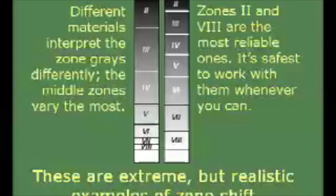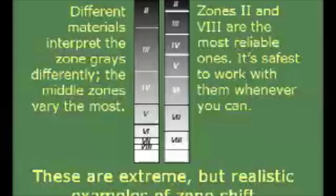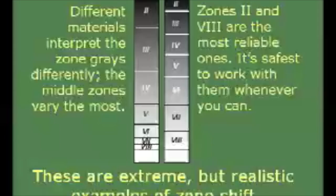Except for the concept of N numbers, the zone system methods work well with BTZS. There are many subject types that can be spot metered effectively, and the principle of zone placement to produce a visualized gray tone in the print is theoretically sound. But zones are a moving target, and different types of film, developer, and printing paper can render them very differently. Because the middle zones are affected most by these shifts, it's safest to work with the extreme zones 2 and 8 whenever possible.